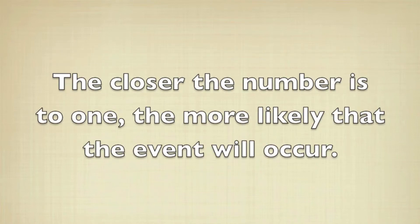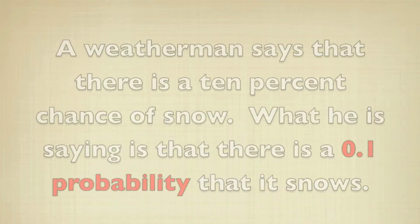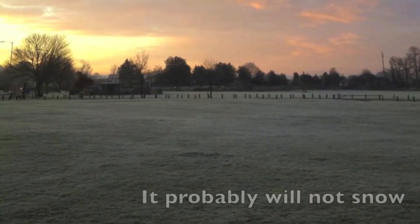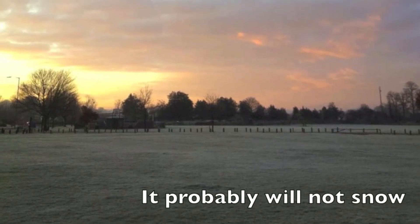The closer the number is to 1, the more likely the event is. When a weatherman says there's a 10% chance of snow, what he's actually saying is there's a 0.1 probability that snow occurs. In this case, it probably is not going to snow.